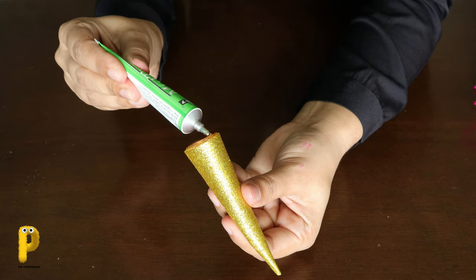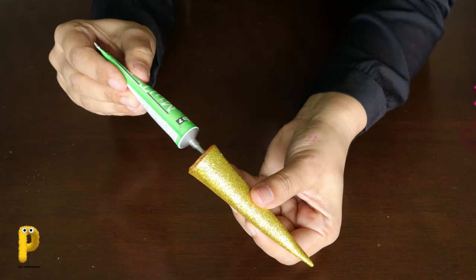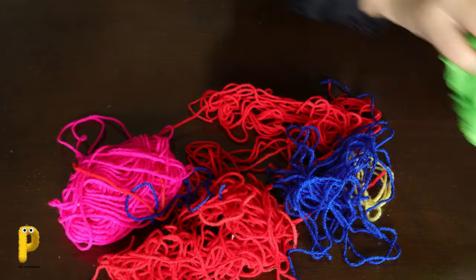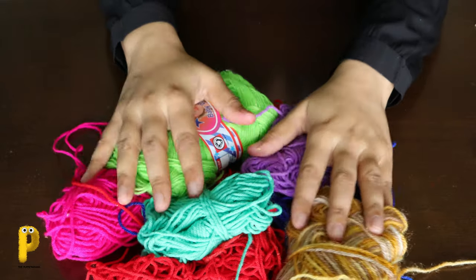Put some glue on the bottom of the horn. Wear the puppet and stick it nicely right between the ears. And now the most exciting part. The rainbow colored hair.